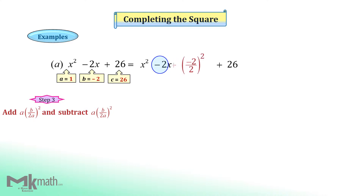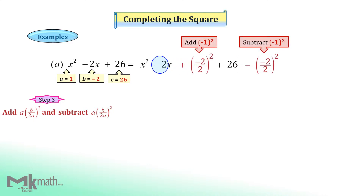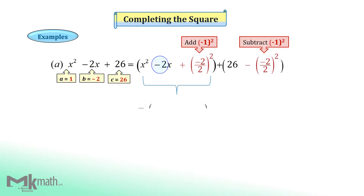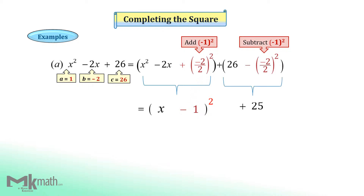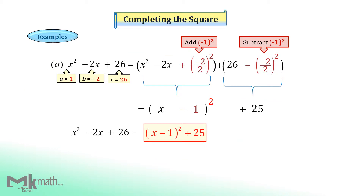Add minus 1 squared and subtract the same value. Now make the square form for the first bracket group. Take x from the first term and take negative one from the last term. Then simplify the second bracket group: 26 minus 1, which is 25. So the vertex form becomes x minus 1 squared plus 25.